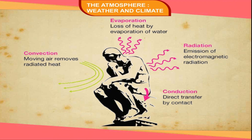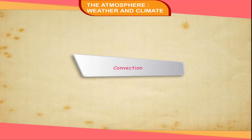Conduction. Conduction is the transfer of heat through contact. A cooler body comes in contact with a warmer body and gets heated. When the lower layer of the atmosphere, which is in touch with the ground, comes in contact with the upper layer, the heat particles move from the lower to the upper layer. Thus, the atmosphere is heated gradually upwards.